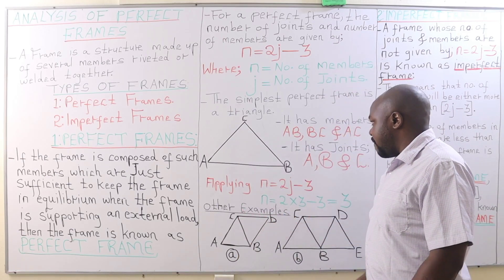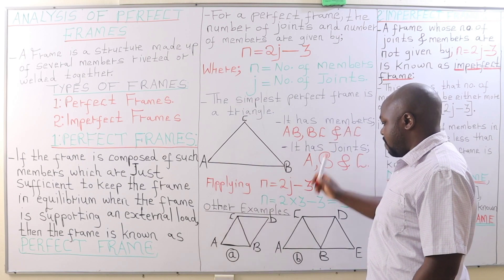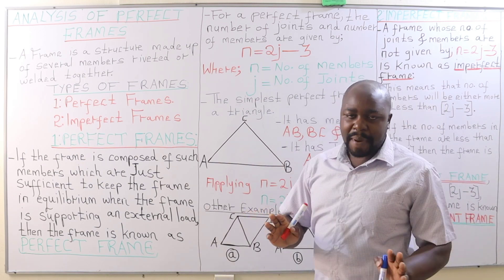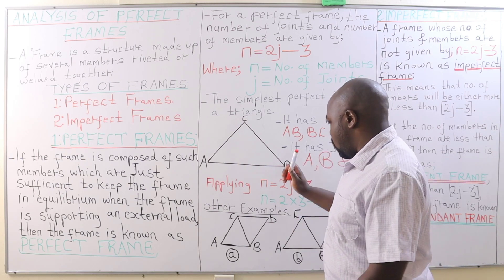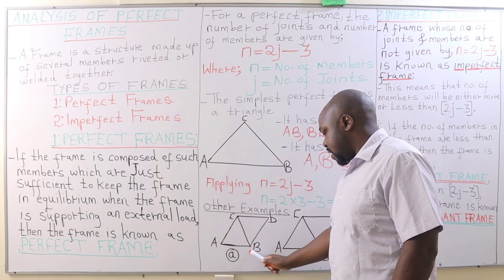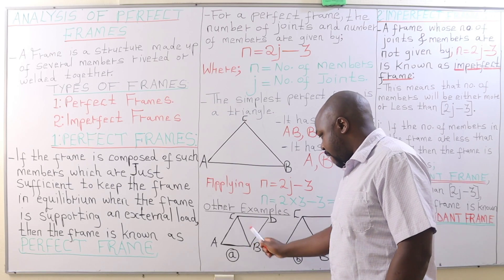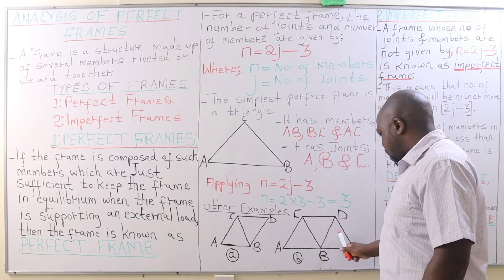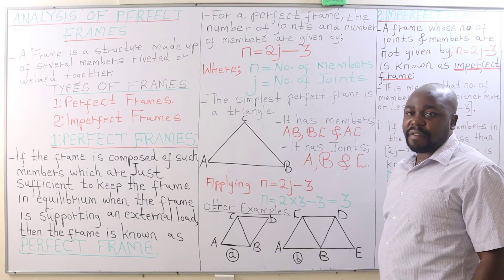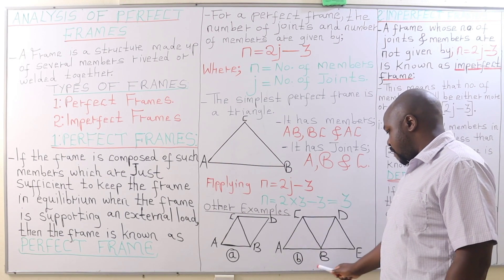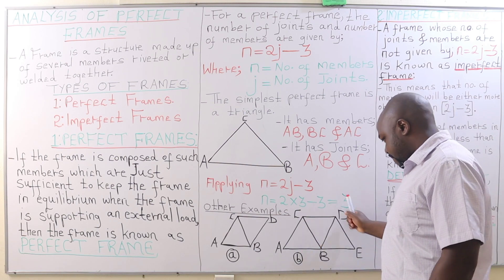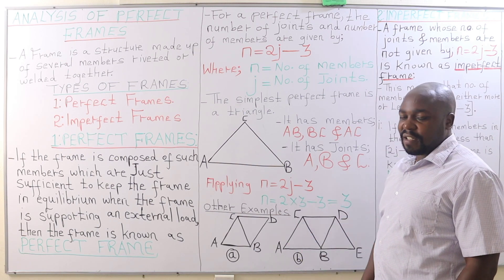Other examples of perfect frames: we have this one here that looks like a parallelogram with 4 joints and 5 members. We also have this frame here with 5 joints and a number of members.